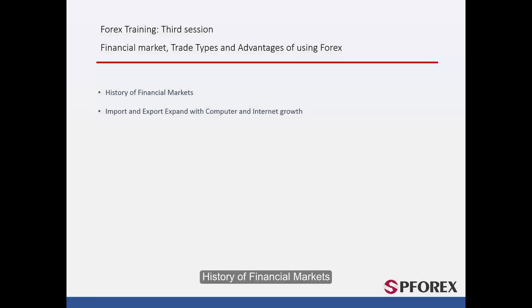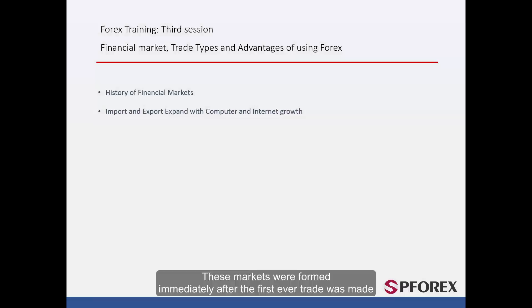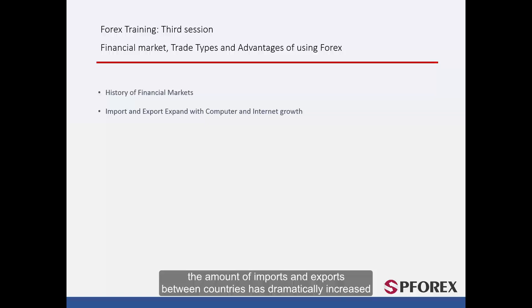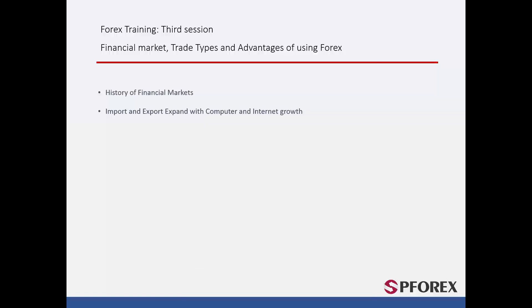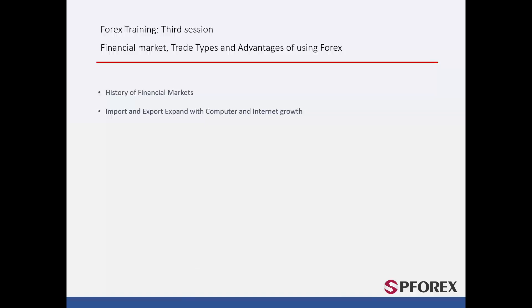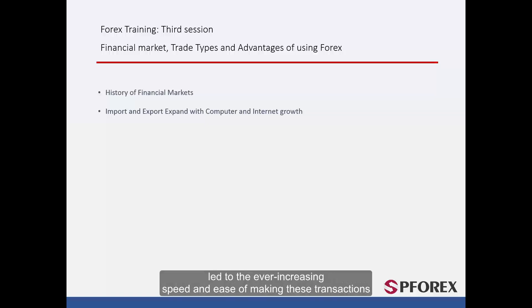History of Financial Markets. These markets were formed immediately after the first ever trade was made. With the rapid technological progress and industry expansion, the amount of imports and exports between countries has dramatically increased. As a result, the core of foreign exchange and financial market relations were established. The beginning of the computer age and the birth of the internet led to the ever increasing speed and ease of making these transactions, making it a bigger business than ever.